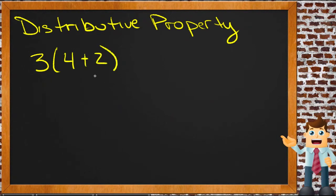The distributive property says that although we can do this by adding 4 plus 2 to get 6 and then multiplying 3 times 6 to get 18, we can also do it by multiplying 3 times 4 to get 12,